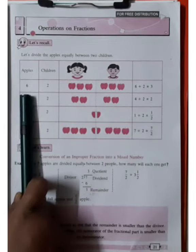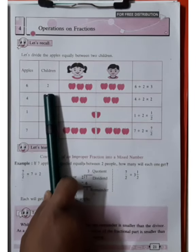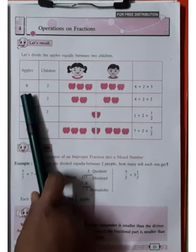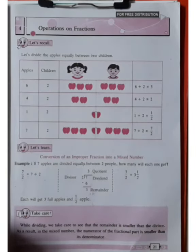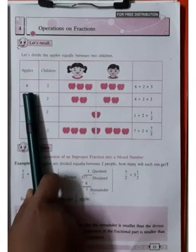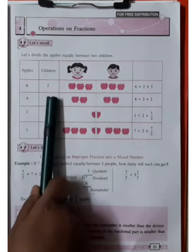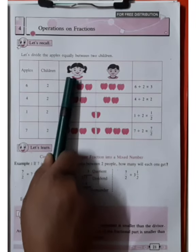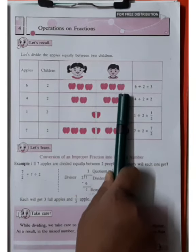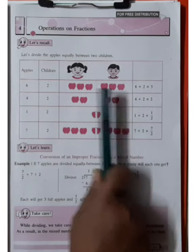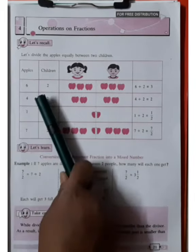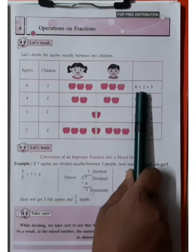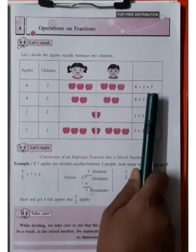These are the number of apples. First example: six apples and the number of children is two. It means six apples are divided between two children. Six apples — how many children? Two. So two children get six apples. First child gets three apples, second child gets three apples. It means that six divided by two is equal to three.